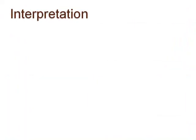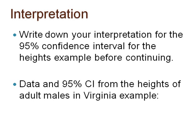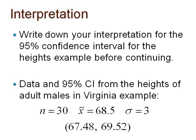Now we are ready to think deeper about the interpretation of a confidence interval. Please pause here to write down your interpretation of the 95% confidence interval for the mean height of adult males in Virginia, the example introduced in video 4. The data from that example are shown here. The confidence interval was 67.48 to 69.52.